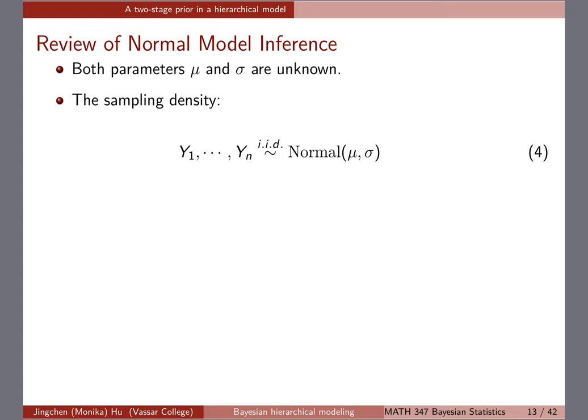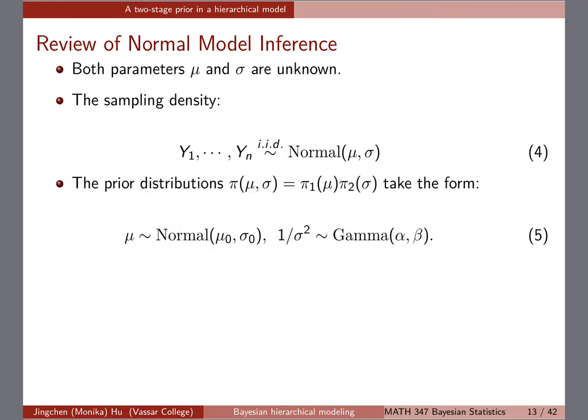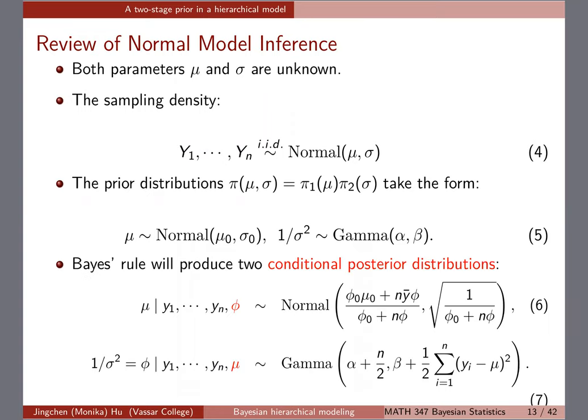So, the normal model inference — just a quick review. When both parameters mu and sigma are unknown, the sampling density is IID normal for all of the observations. You put independent priors for mu and sigma: a normal for mu, and a gamma for the precision, one over sigma squared. We did Gibbs sampling before the break. Equations six and seven are the full conditional posterior distributions, and that's how you keep the sampling going to get an approximation to the final posterior distribution to summarize phi and mu.